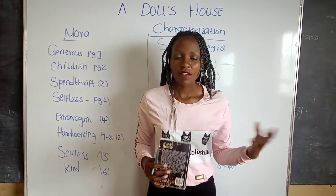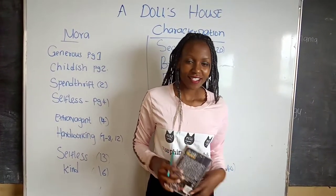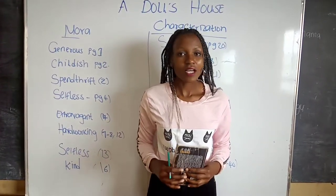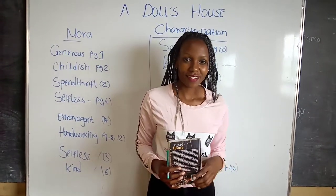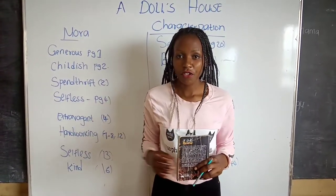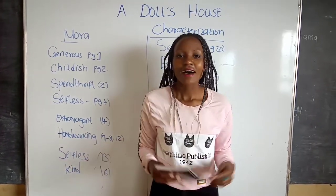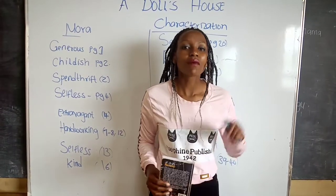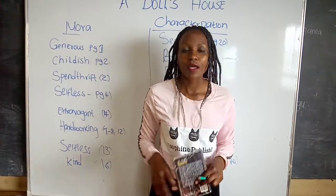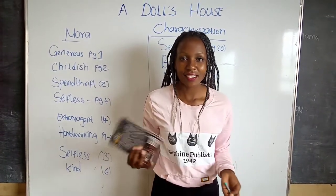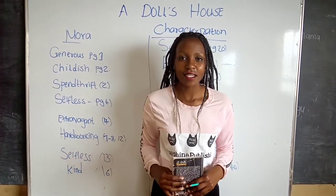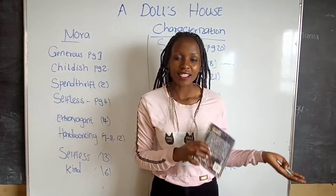Before we go to our first character today, let us understand what characterization is and how we give the characters their traits. Characterization is whereby we give the characters in a story — that is a play or a novel — their traits or attributes. And to do this, we use adjectives most of the time. There are three ways of characterization: first, look at what the author says about a certain character; number two, look at what the character does, his or her action; and number three, look at what other characters say about a certain character.